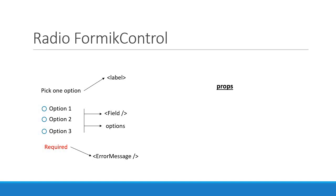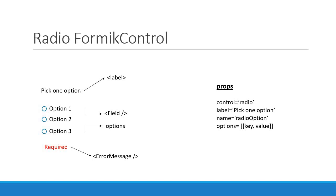Let's take a look at the props that would be required to implement this component. First and foremost we set the control prop to radio, which is required to determine the type of Formik control we need to render. Second we need a label prop which will be the label text for the form field. Third we pass in the all important name prop which is required by Formik for the field as well as the error message components. Another essential prop is the options prop which is basically an array of objects. Each object will contain key value pairs which we use to render the individual radio buttons for the component.